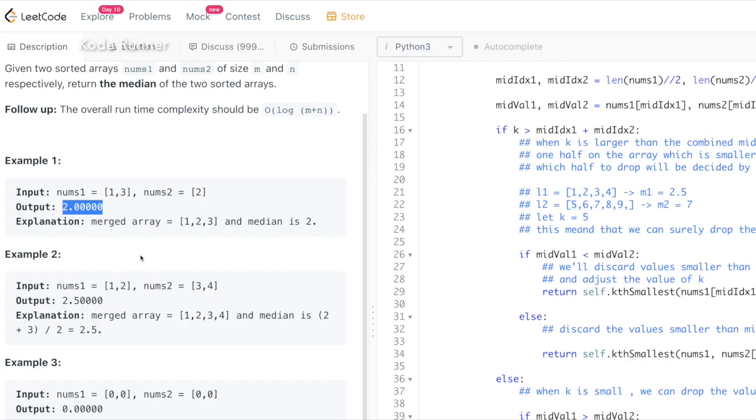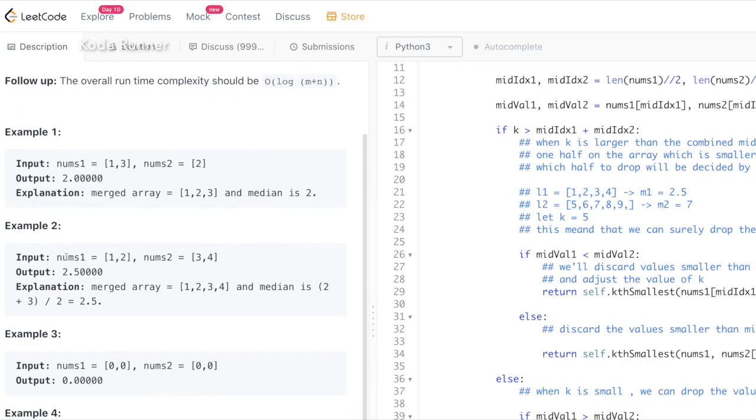If we check out the second input example, we have 1 and 2 in the first array and 3 and 4 in the second array. If we combine both the arrays, we get 1, 2,